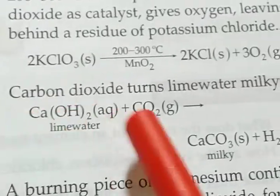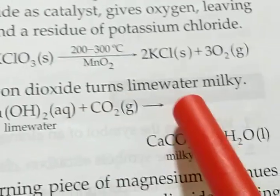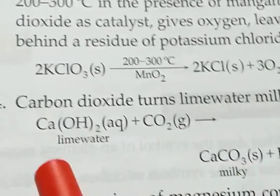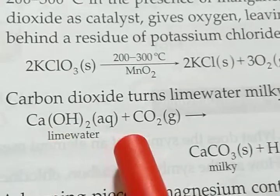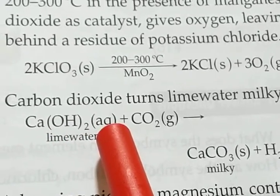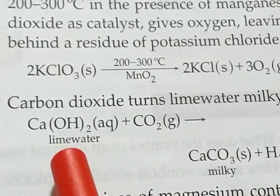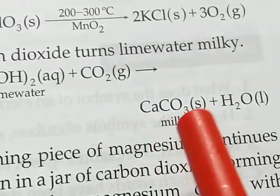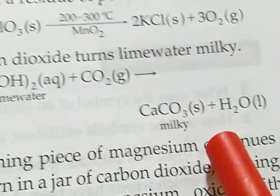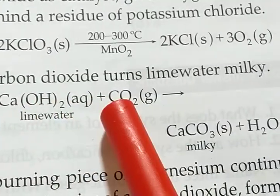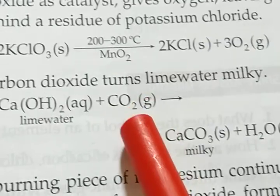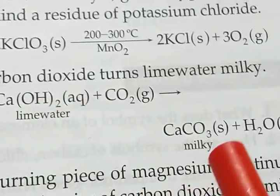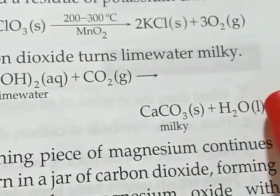Next, carbon dioxide turns lime water milky. Calcium hydroxide, that is aqueous solution, which we call lime water, plus carbon dioxide gas, forms calcium carbonate, that is solid. I mean if we pass carbon dioxide through calcium hydroxide, then that turns into milky calcium carbonate, that is solid in state, and water in liquid form.